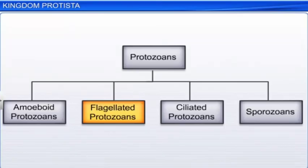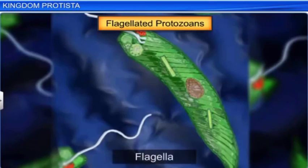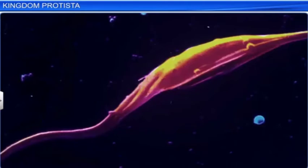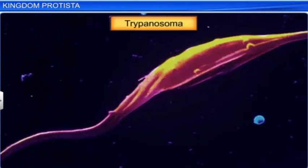The flagellated protozoans, as the name suggests, have flagella. They may be free living or parasitic. Some parasites like Trypanosoma can cause diseases like sleeping sickness.